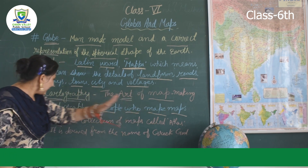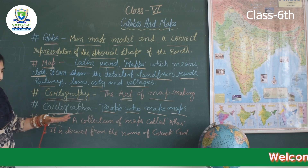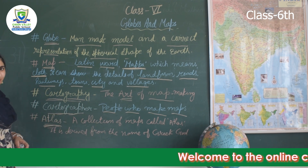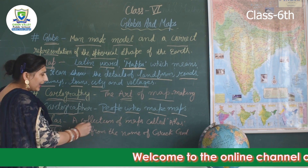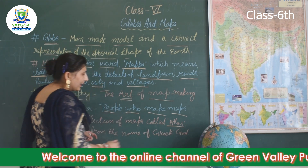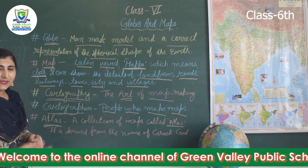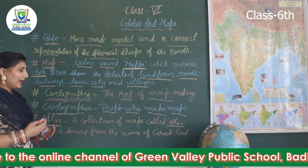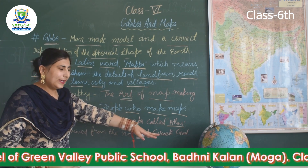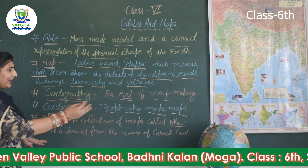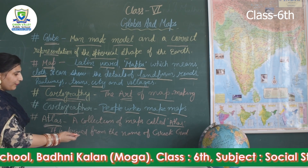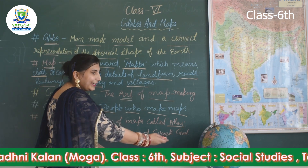The next point is atlas. What is an atlas? A collection of maps is called an atlas. The collection can include physical, thematic, and political maps. The word 'atlas' is derived from the name of a Greek god.